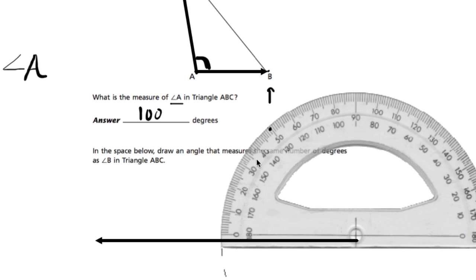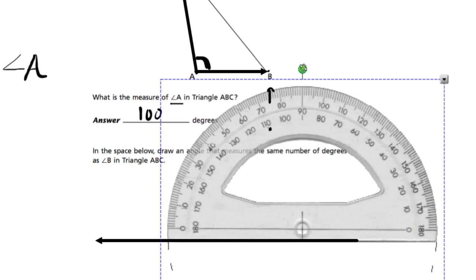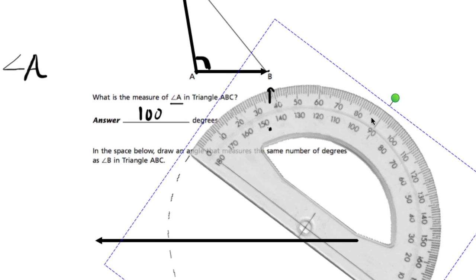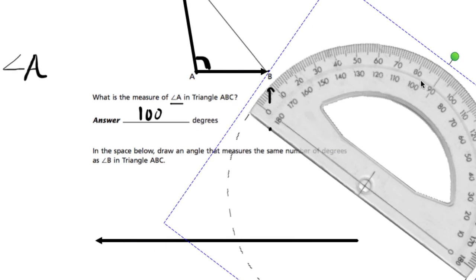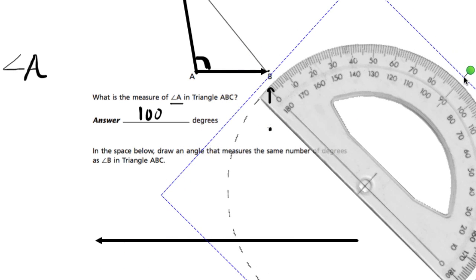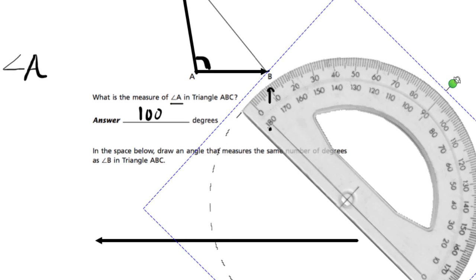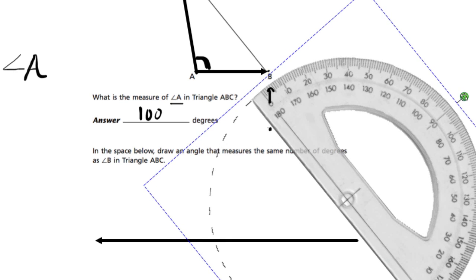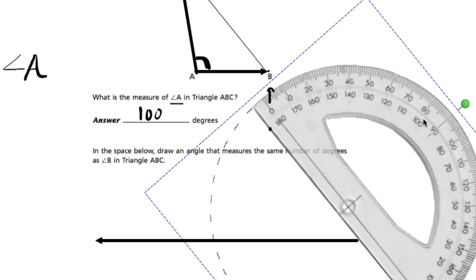And now I just take my protractor, turn it, and use the bottom as a ruler to connect that point to the end point of the line. Just like something like this. Almost there. And now you take your pencil and draw the second angle.